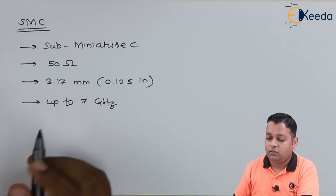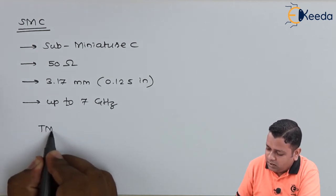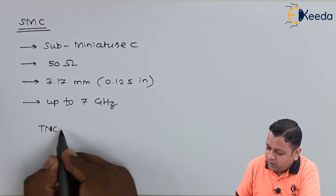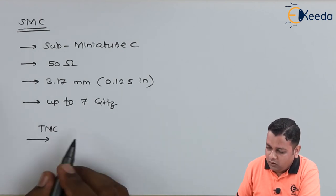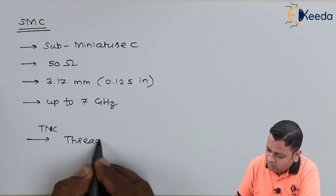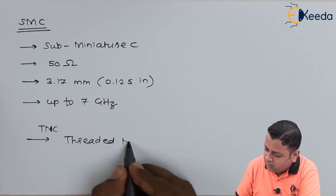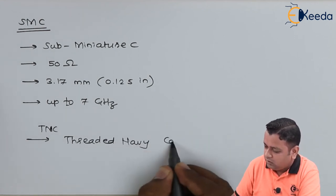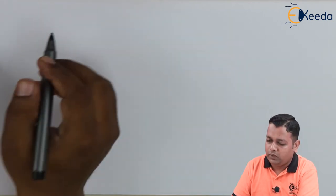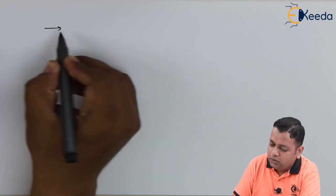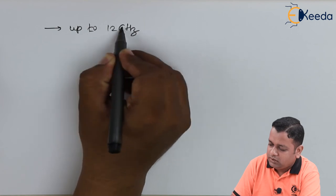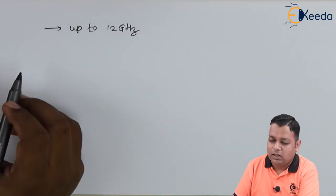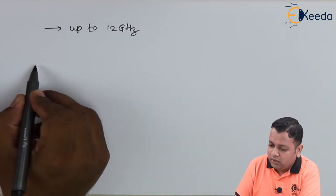Next to SMC we have the TNC connector, which stands for Threaded Navy Connector. The Threaded Navy Connector operates up to frequencies of 12 gigahertz.